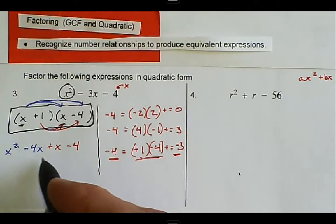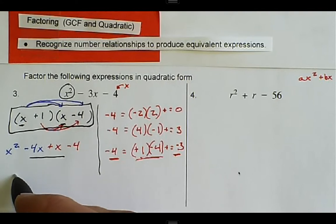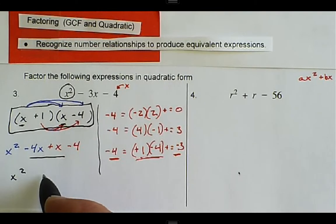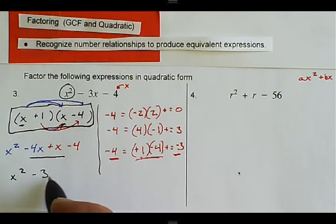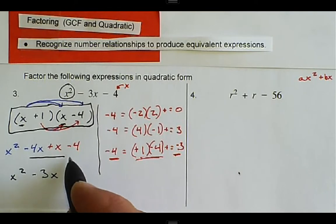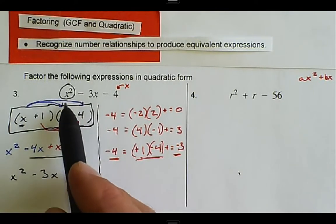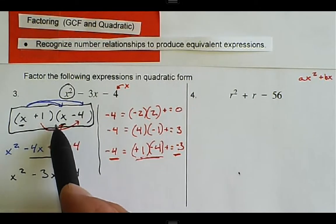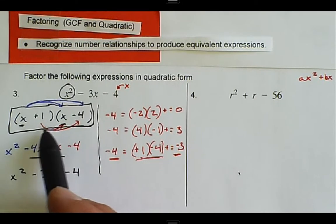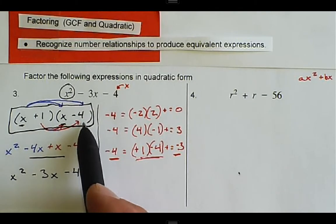Combining like terms: we finish with x squared, and negative four plus one gives negative three x, and then minus four. That matches the original equation, so x plus one times x minus four is the correct factored form.